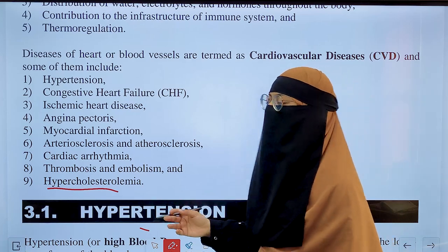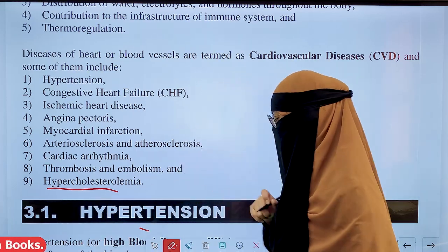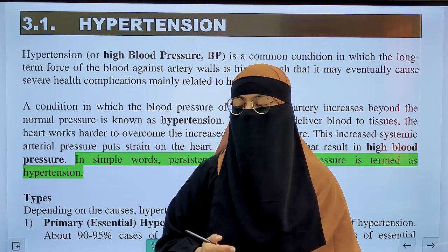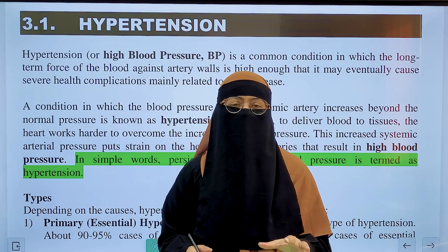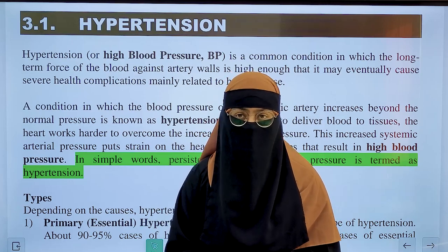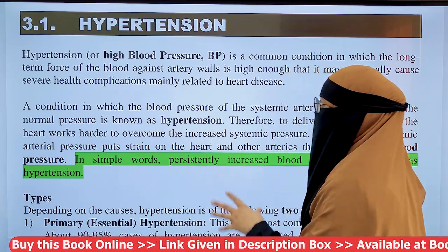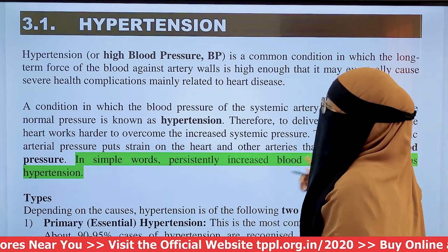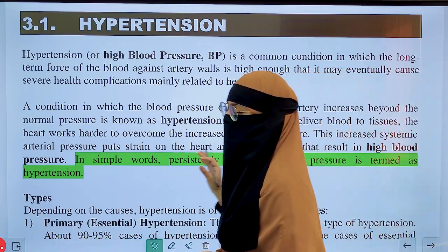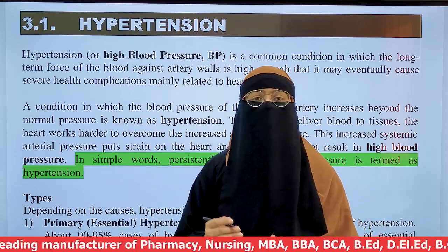These diseases are related to the heart or blood vessels and will be covered in detail in this chapter. First, I will start with hypertension. When blood exerts extra pressure against the blood vessel walls, we call it high blood pressure or hypertension. It is a common condition in which long-term force of the blood acts against artery walls, high enough to eventually cause severe health complications. In simple language, we call it persistently increased blood pressure.